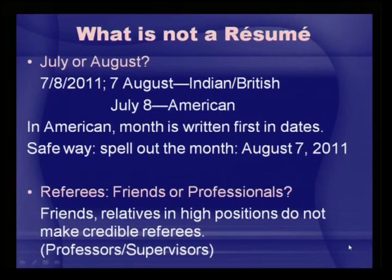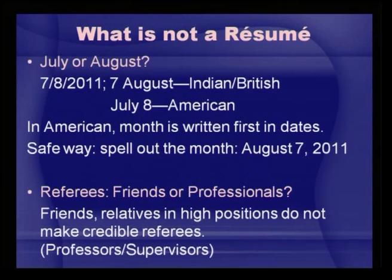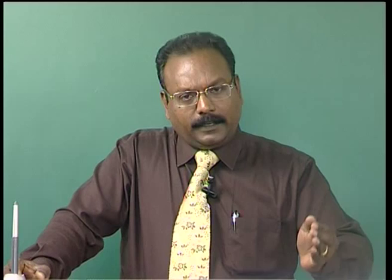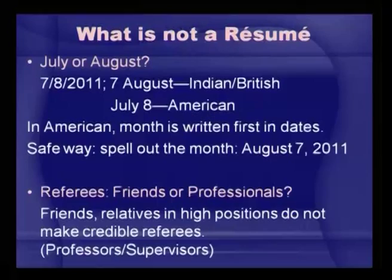Regarding dates: when you write '7/8/2011,' it means 7 August in India, but July 8 in the American context because in America the month is written first. The safest way is to spell out the month in word form — write 'August 7, 2011' — which makes it much simpler and avoids confusion.